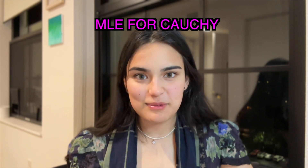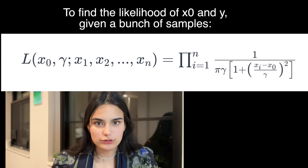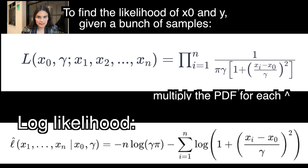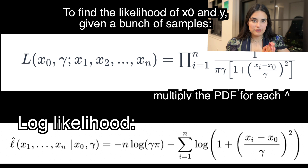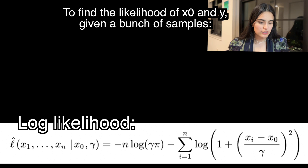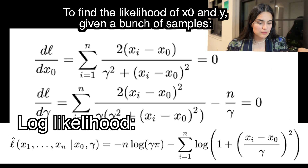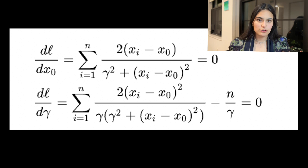This leads us to maximum likelihood estimation, a strategy we've discussed in class. The likelihood function for the Cauchy distribution is formed by multiplying the PDF values of the observations we get. We can then take the log likelihood, which gives us a summation over all sample points. We are trying to find, given a certain x0 and gamma — the location of our spinner — what is the likelihood. We can set the derivative of this log likelihood to zero, which enables us to find the maximum.